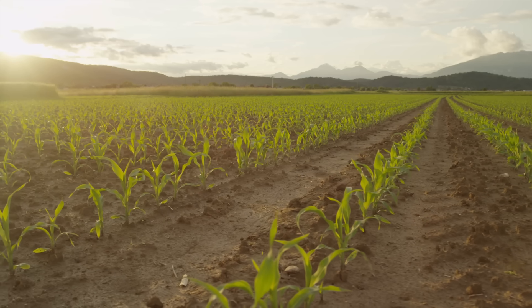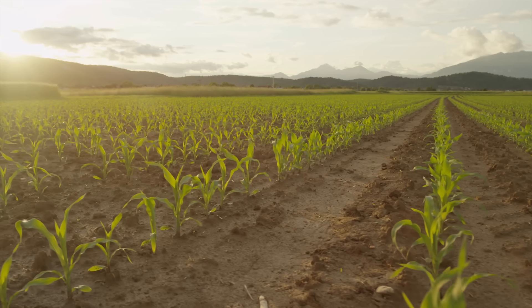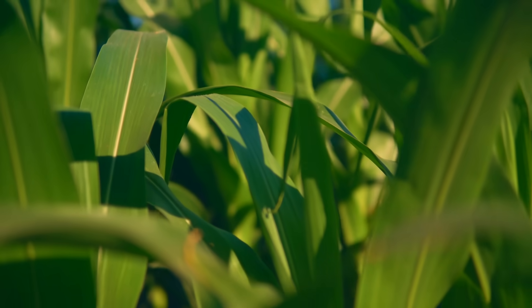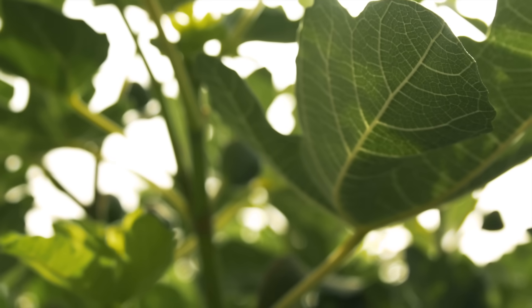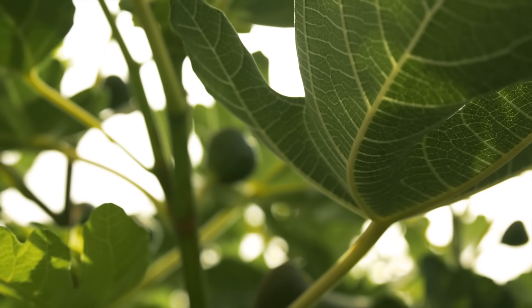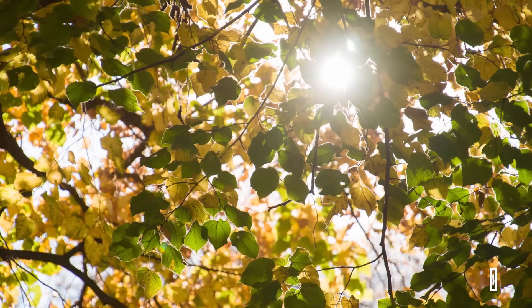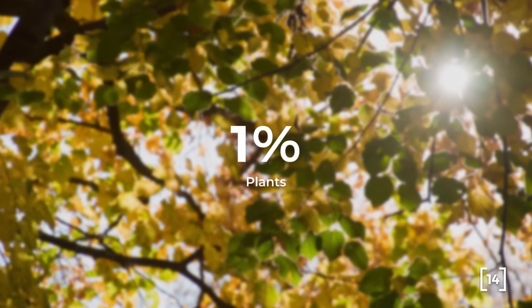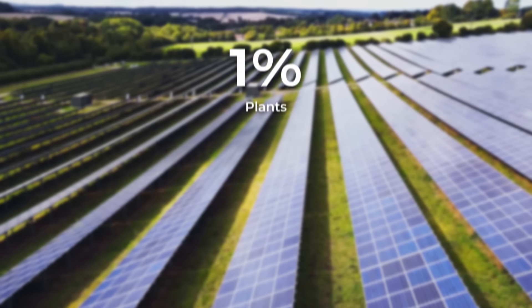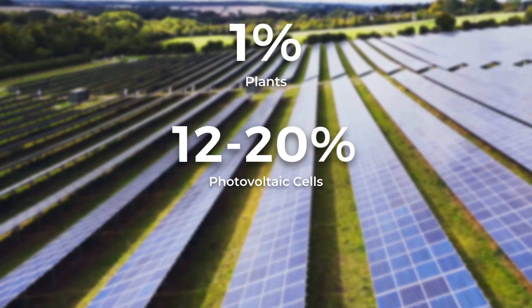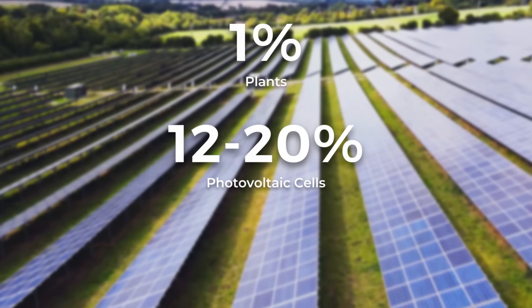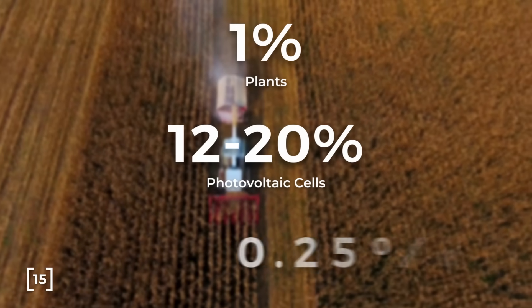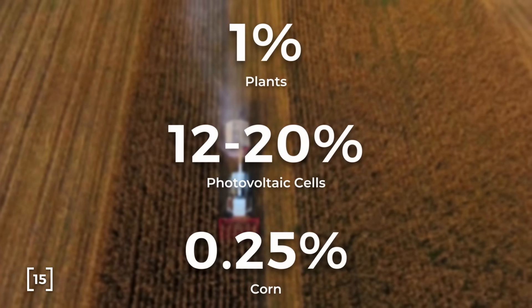The reality is, photosynthesis is an incredibly inefficient way to turn sunlight into usable energy. The energy efficiency of photosynthesis is usually under 1% for plants. Meaning on average, plants can only capture and convert about 1% of sunlight. Humans can outdo that with cheap solar cells that can achieve between 12 and 20% efficiency. Corn is even lower than the plant average, at 0.25%.